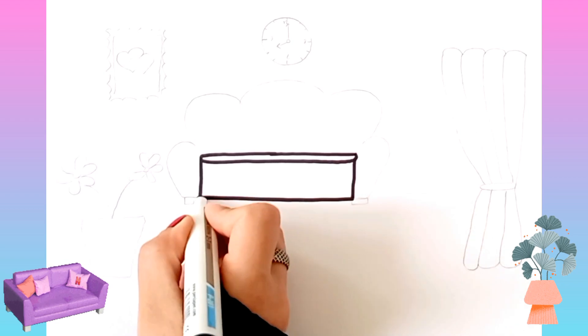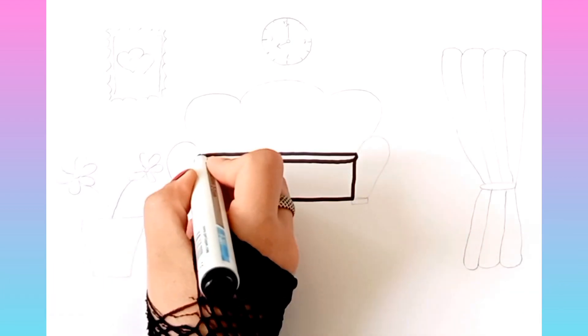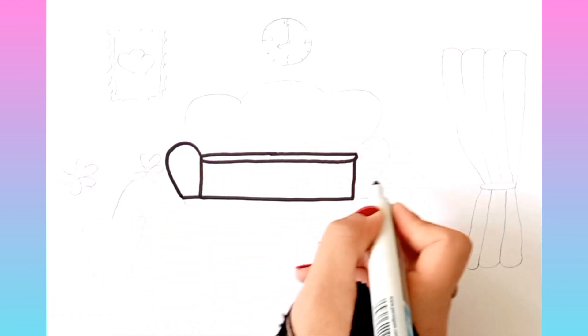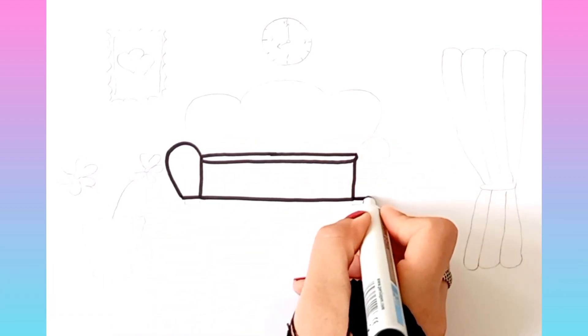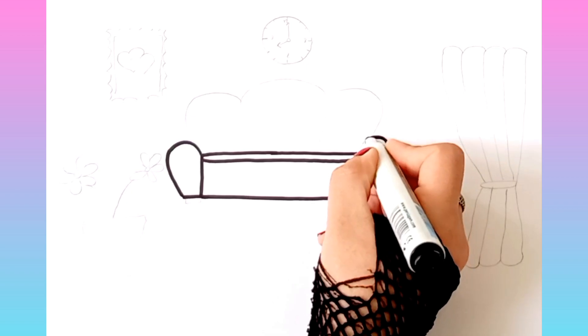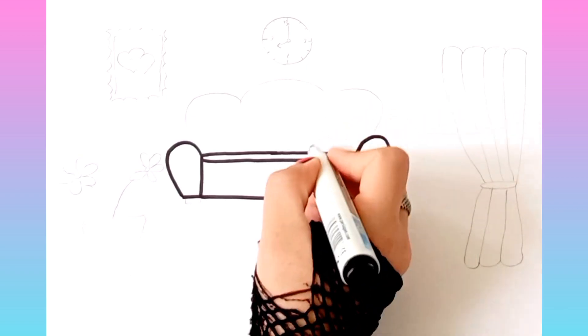C is for cat, c, c, cat. D is for doll, d, d, doll.